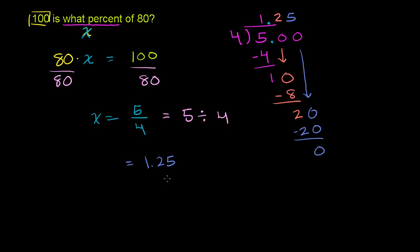you literally just have to multiply this times 100, or shift the decimal over twice. So this is going to be equal to, as a percent, if you just shift the decimal over twice, this is equal to 125%.